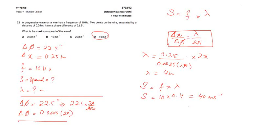Two points on the wire separated by the distance of 0.25 meter have a phase difference of 22.5 degrees. What is the maximum speed of the waves? So first of all, delta phi in phase difference is 22.5, the path difference is 0.25 meter, the frequency is 10 Hertz.